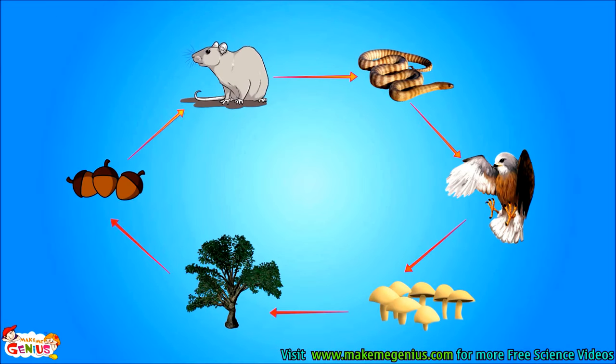Let us see another food chain. A rat eats acorns fruit, which comes from a plant. A snake eats rats. An eagle eats the rat. The eagle dies, gets decomposed, and plants use those decomposed nutrients to produce fruit.